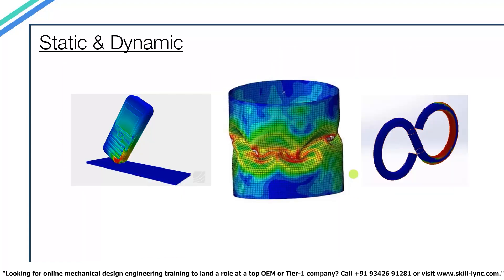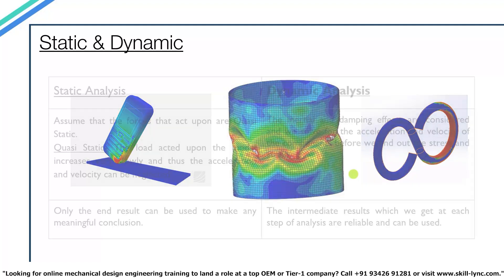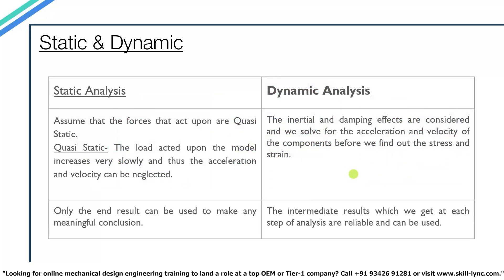In the previous session we saw that there are many special types of analysis such as buckling, fatigue, and drop test. These special types were created for specific tests and we have special modules in SOLIDWORKS to perform them. But for general structural applications we will mainly be using either static analysis or dynamic analysis depending on the type of study.